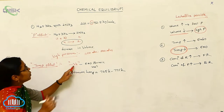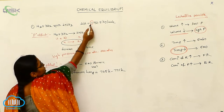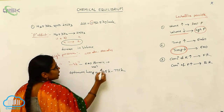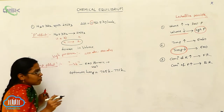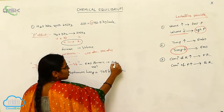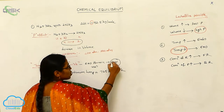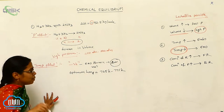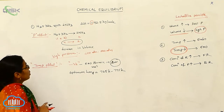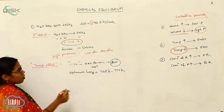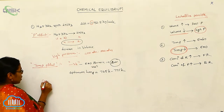The negative symbol here indicates the exothermic reaction. Since it is exothermic, theoretically we need low temperature. But we should not use low temperature, so we are using the optimum temperature. The third effect is the effect of concentration.